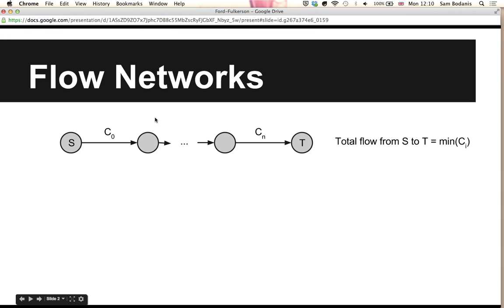This slide shows an extremely simple flow network that is completely linear. Here is a start node S connected to another node and the capacity of that pipe is C0. Then there is an arbitrary number of pipes in between, and finally there is the nth pipe which has the capacity Cn connected to the output T.